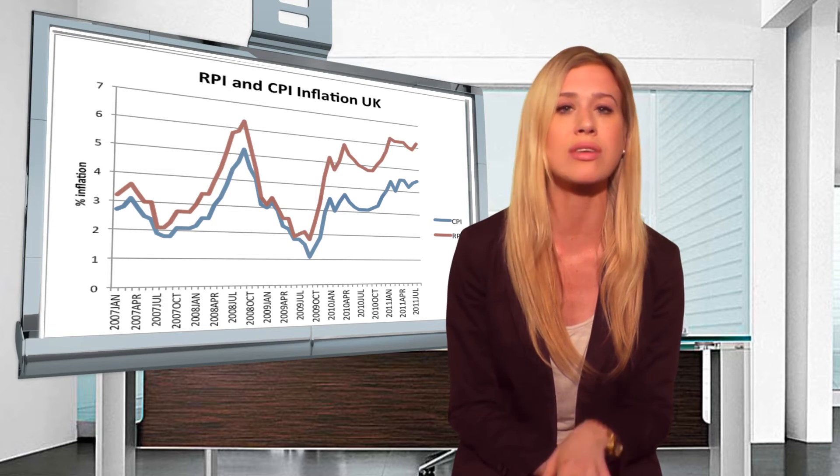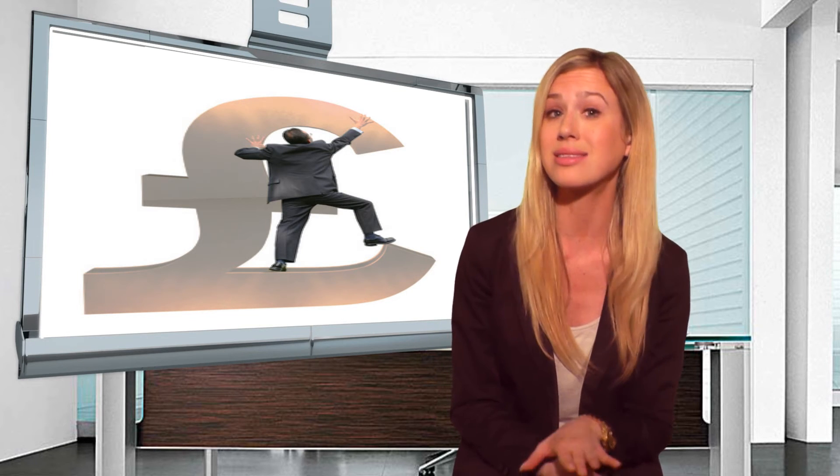The RPI includes a number of items that are excluded in the CPI and on the contrary. Secondly, the two indicators measure price change for different target populations, retail and consumers. Lastly, the two measures use different formulas, leading to a difference known as the formula effect. Thank you for joining us for the term of the day. Join us for a new term every day.